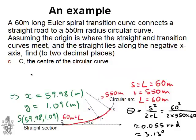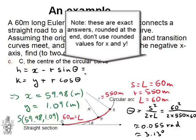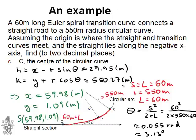So, the formula for the center of curvature. Well, we have the following. We've got H, which is X minus R times sine theta. And we have K, which is Y plus R times cos theta. Now, if we calculate these, if we calculate H, we get approximately 29.95 and that's meters. If we calculate K, we get about 550.27 meters.